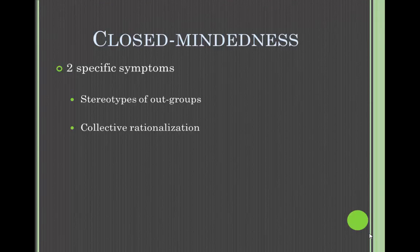The next category is closed-mindedness, which ignores outside influences on the group — the group's willingness to ignore differences in people and warnings about poor group decisions. This breaks down into two symptoms. The first is stereotypes of out-groups: stereotyped perceptions of groups, enemies, or competition, underscoring the belief that any adversaries are too weak or too stupid to counter offensive attacks. The second is collective rationalization: group members ignore warnings about their decisions that might prompt them to reconsider their thoughts or actions, viewing outside warnings as bad news.